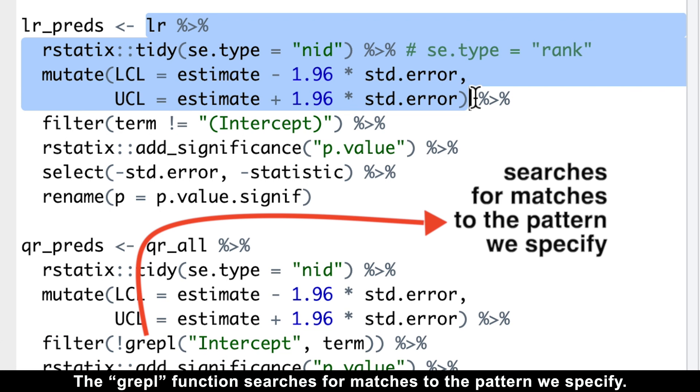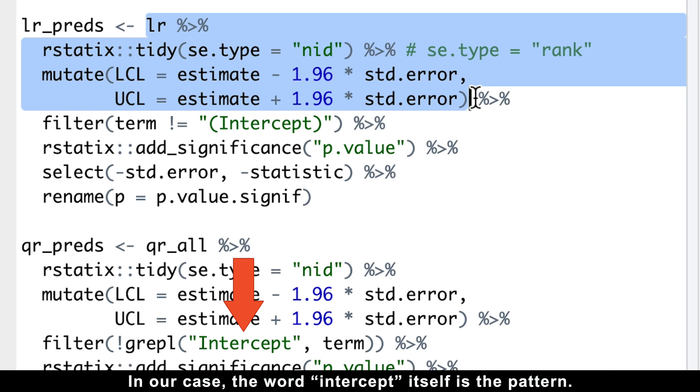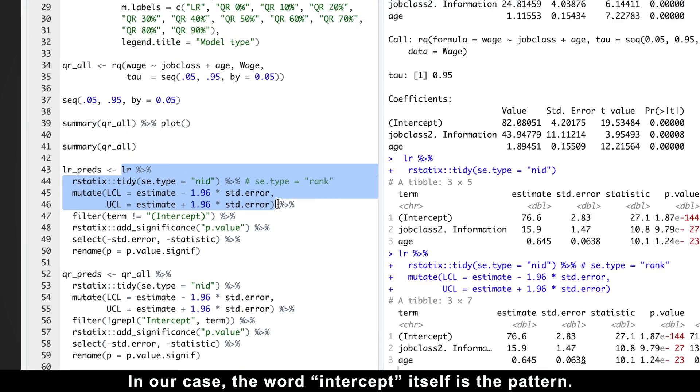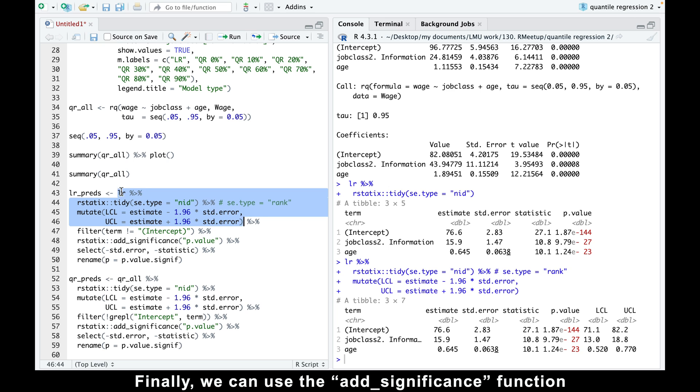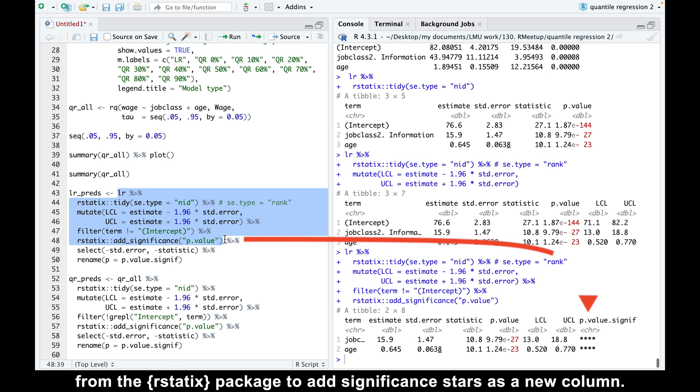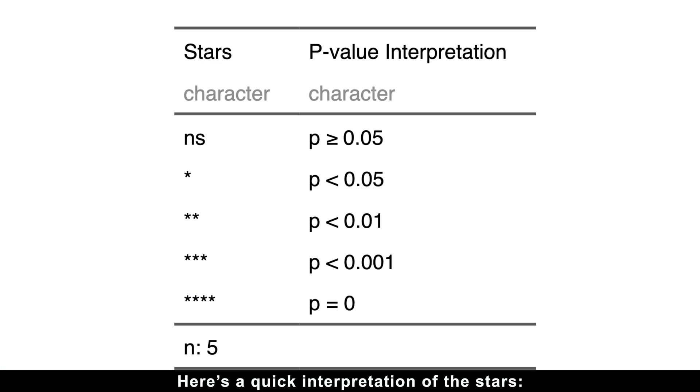The grepl function searches for matches to the pattern we specify. In our case, the word intercept itself is the pattern. Finally, we can use the add_significance function from the rstatics package to add significant stars as a new column. Here is a quick interpretation of the stars.